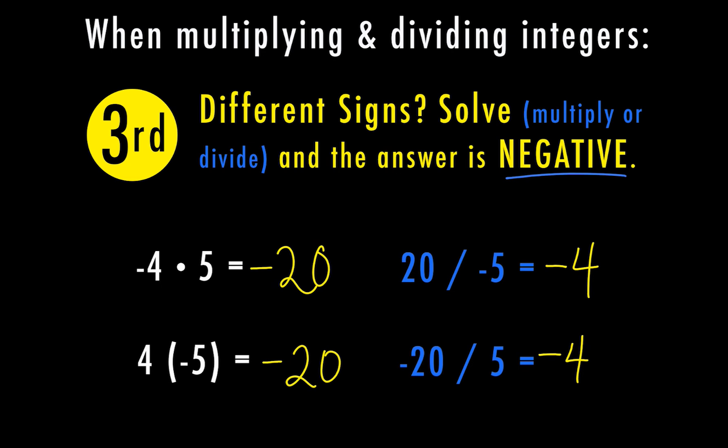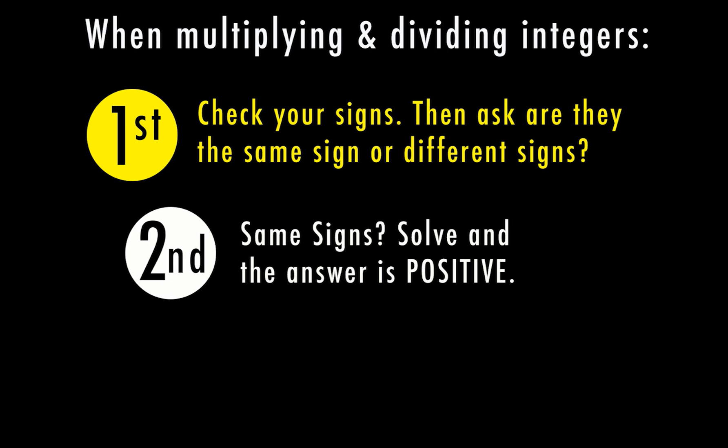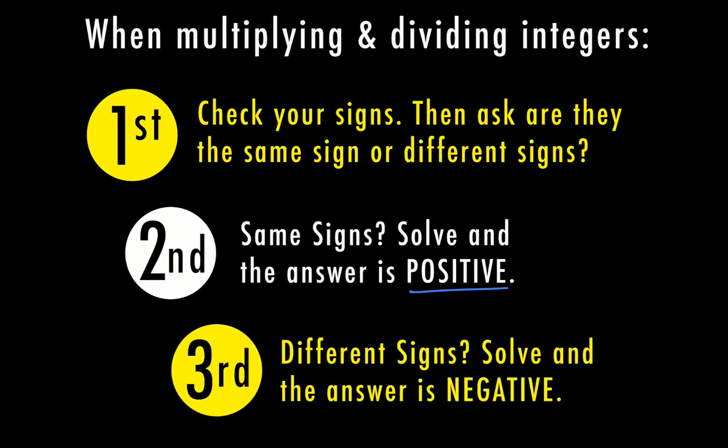So that's really all there is to it. Let's go ahead and recap our steps. First, we're going to check our signs and ask if they're the same sign or different signs. Second, if they're the same sign, we're going to solve by multiplying or dividing and the answer is going to be positive. Third, if they have different signs, we're going to solve by multiplying or dividing and the answer is negative.